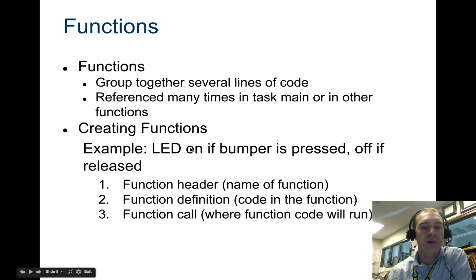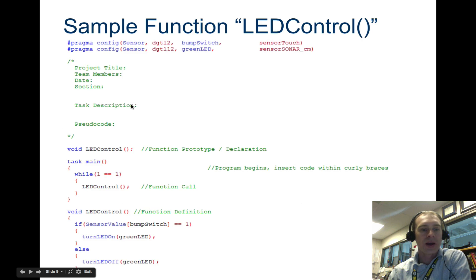So if you want to create a function where the LED is on if the bumper is pressed and off if it's released, then the first thing we have to do is make a function header, definition, function, and then where we call it. So if you want to come back to this and take a look at these three things, you can do that. But here's the example.